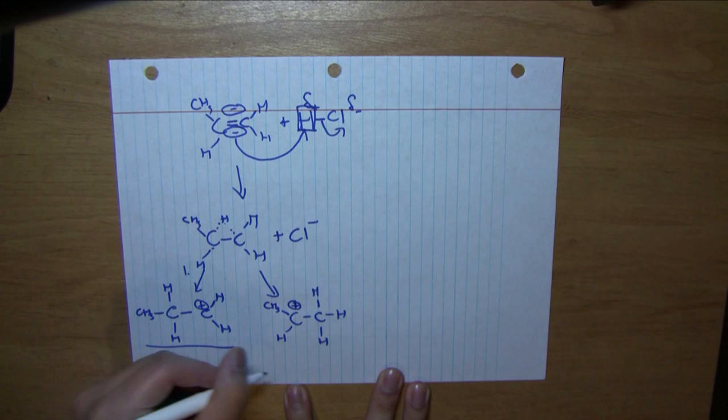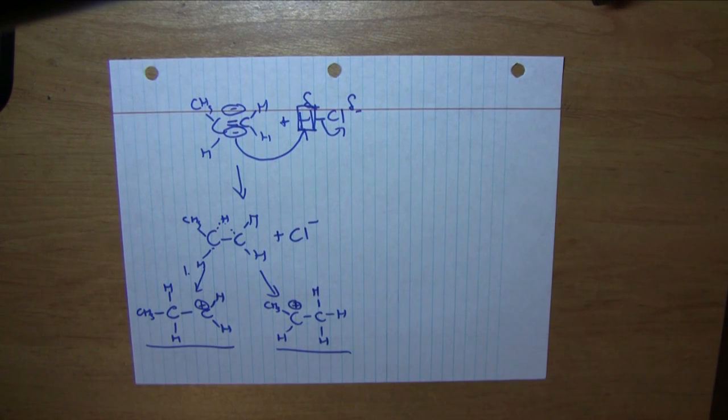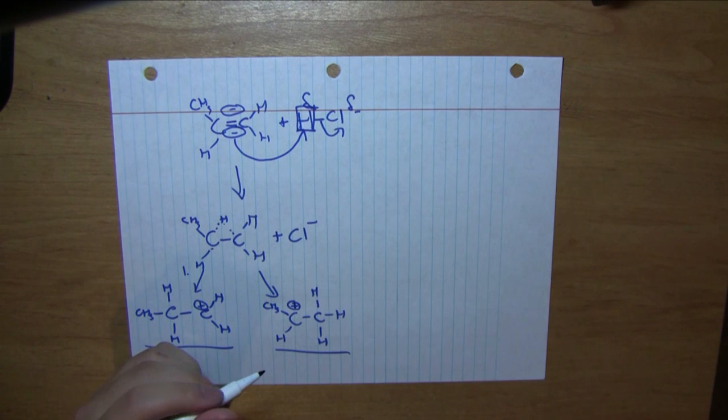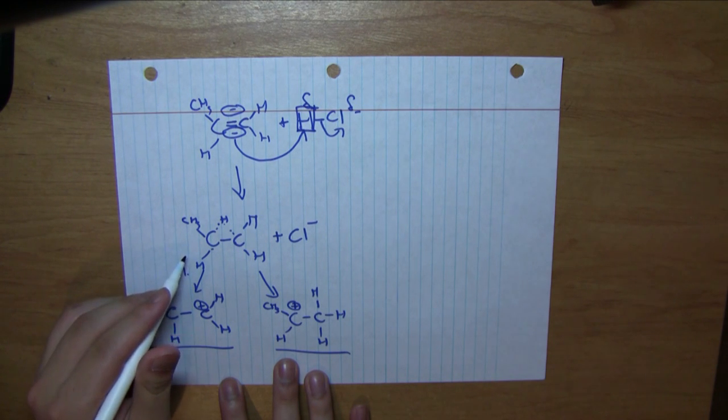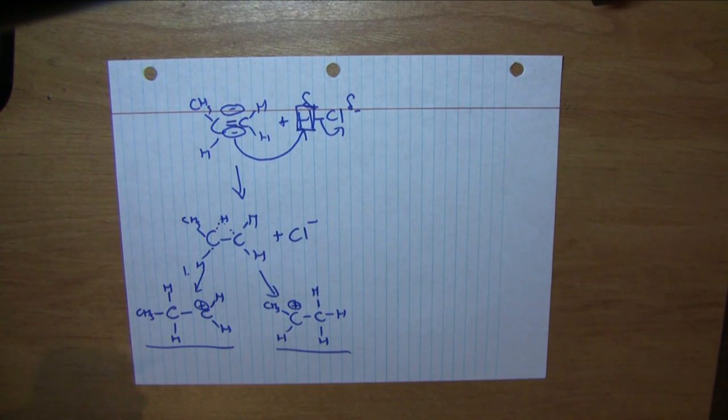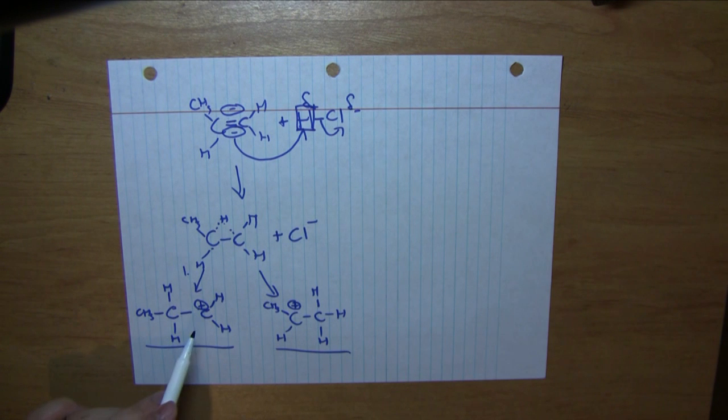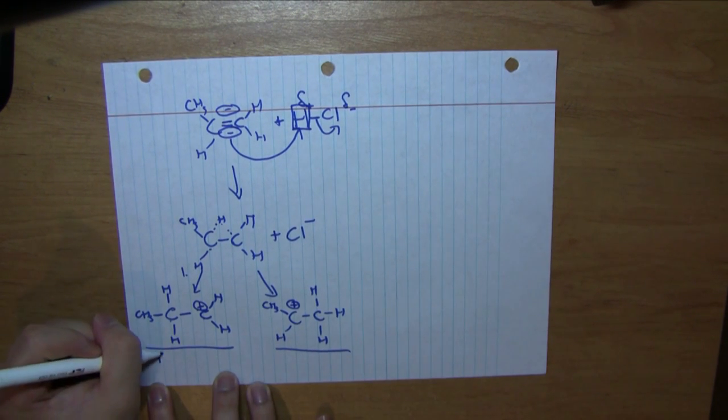Now which one of these is more stable? We want a more stable intermediate because it can last longer and therefore react further, while the less stable intermediate would prefer to go back to its reactant form, forming no product. If we notice here, we have a primary carbocation, meaning the positive charge is on a carbon attached to only one other carbon.